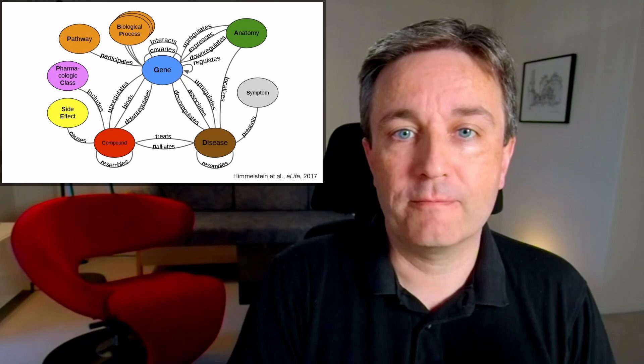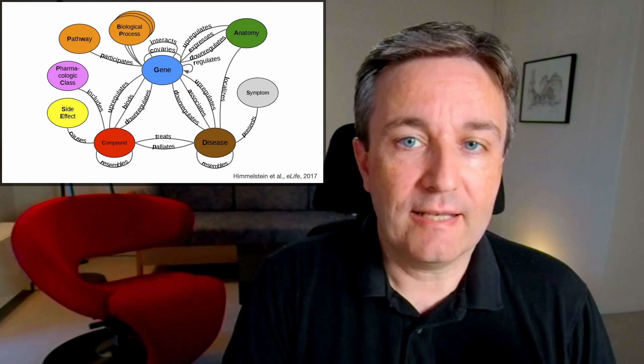That gives you a graph like this, where you have, for example, genes and anatomy terms and diseases and drugs linked to each other in various ways.